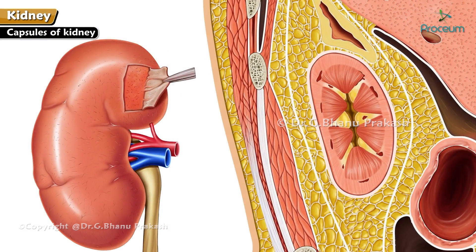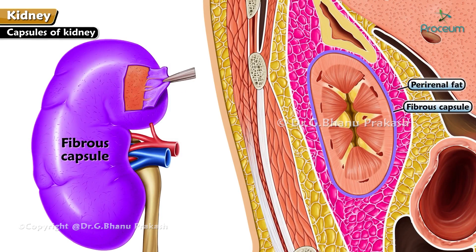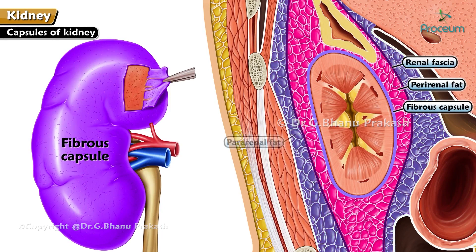Capsules of the kidney: from inside to outwards, the kidney is surrounded by four capsules or coverings — fibrous capsule (the true capsule), perirenal or perinephric fat, renal fascia, and pararenal or paranephric fat.